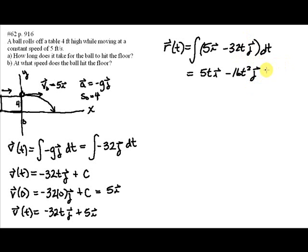Now, remember, r(t), this is our position function. When t is 0, we have our initial position, s-naught, which is equal to 4.